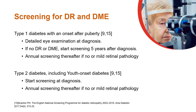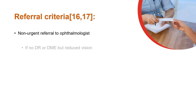In patients with type 1 diabetes with an onset after puberty, a detailed eye examination should be conducted at diagnosis. If no retinopathy or macular edema is found, start screening 5 years after diagnosis. Thereafter, annual screening should be conducted if no or mild retinal pathology is observed.